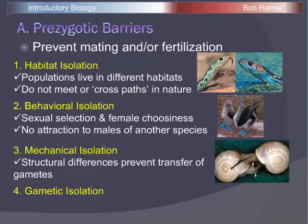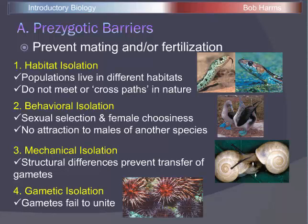Finally, we may have gametic isolation, where the egg and sperm end up in the same place but the sperm cannot fertilize the egg. A good example involves white and purple sea urchins — the sperm of one species cannot penetrate the egg of the other. Even though the sperm and egg are in the same location, chemically they don't interact, making this an effective reproductive barrier.